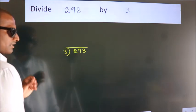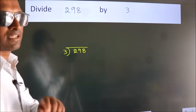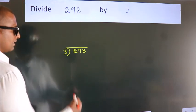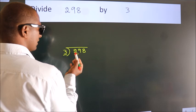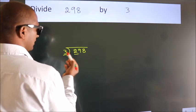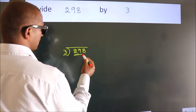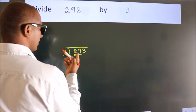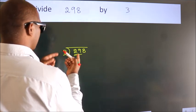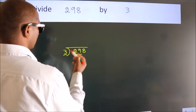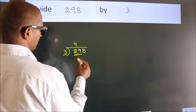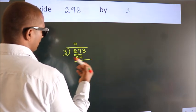This is your step 1. Next, here we have 2, here 3. 2 is smaller than 3, so we should take 2 numbers: 29. A number close to 29 in the 3 table is 3 nines, 27.